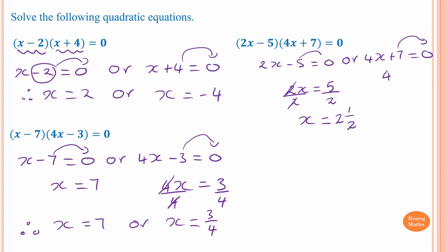For the second equation, moving positive seven to the other side gives negative seven, so 4x equals negative seven. Dividing by four gives x equals negative seven over four. Four goes into seven once with remainder three, so x equals negative one and three quarters, or negative 1.75.